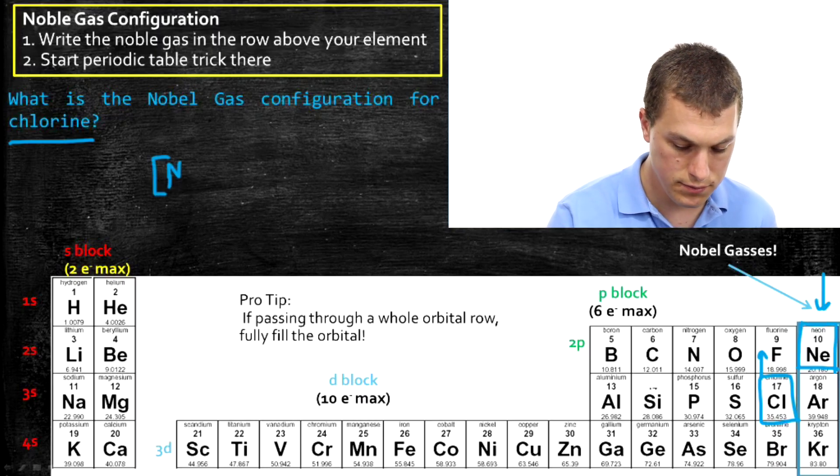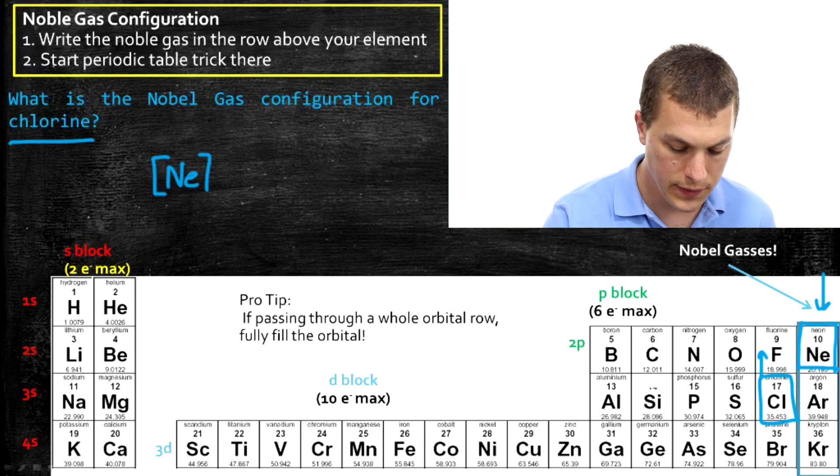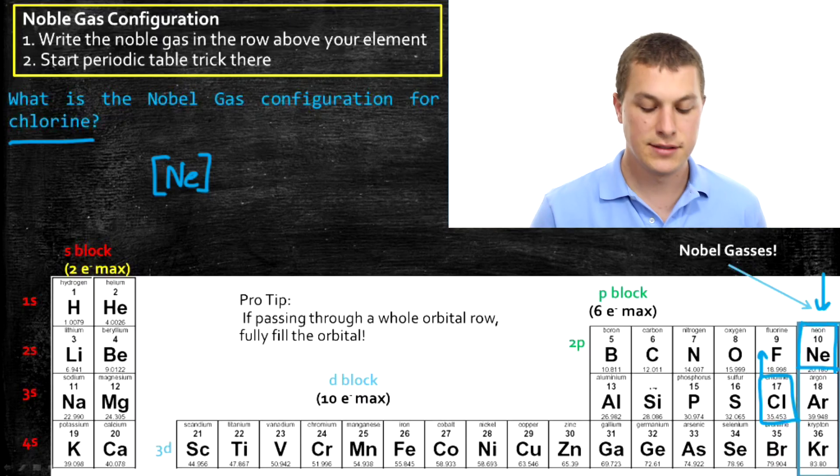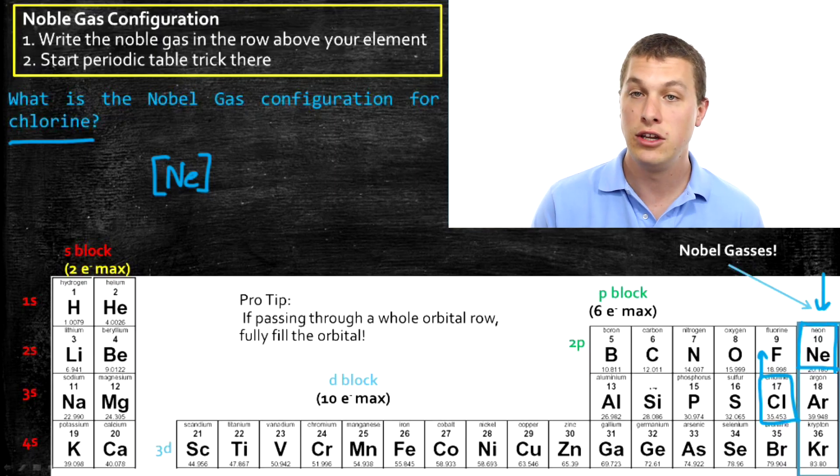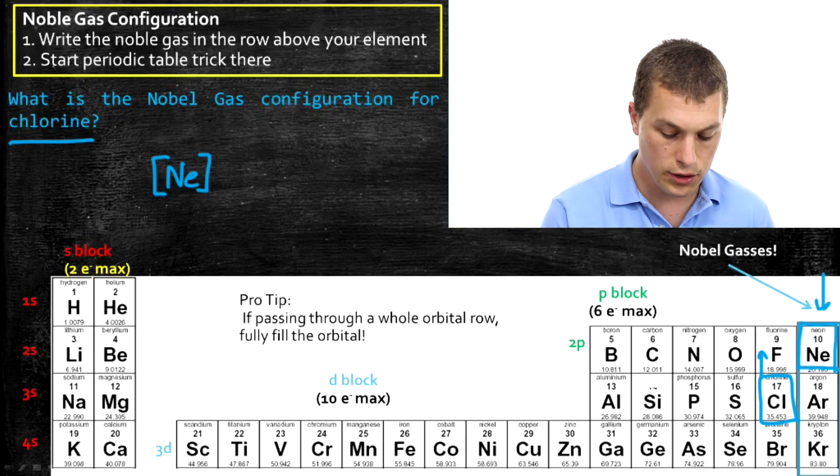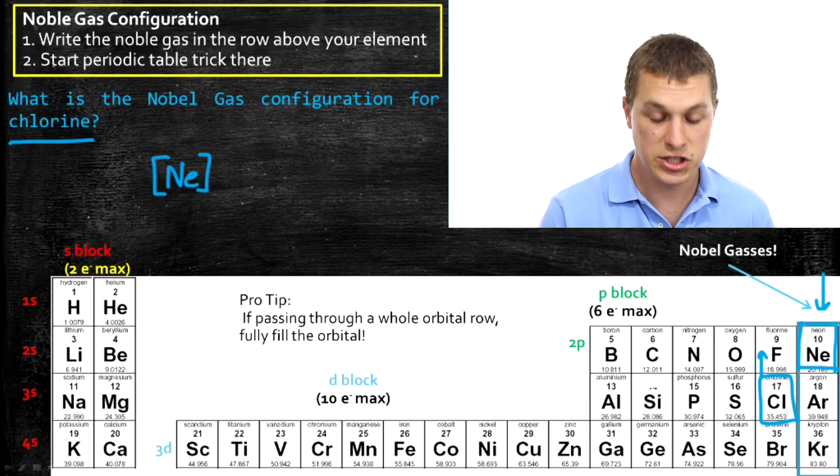So I write neon in brackets. And what that's telling me is we're starting off with the electron configuration of neon. The core of our electrons look exactly like neon. So I don't need to write out 1s2, 2s2, 2p6 every single time. It's a waste of my time. I can just say it looks like neon. And you can remember that neon has that electron configuration. So we're writing the chlorine electron configuration. We're starting now just after neon. Because we said it looks like neon so far.